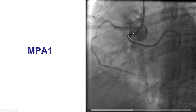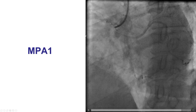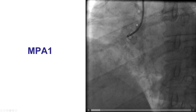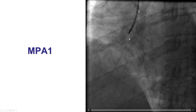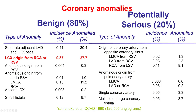Had we not done this imaging and just stented the right coronary artery, we would have missed another potential culprit for the patient's symptoms. Having an anomalous circumflex coming from the right coronary artery or the sinus of Valsalva is the second most common coronary anomaly after the separate ostia of the LAD and the circumflex, and it's usually benign.